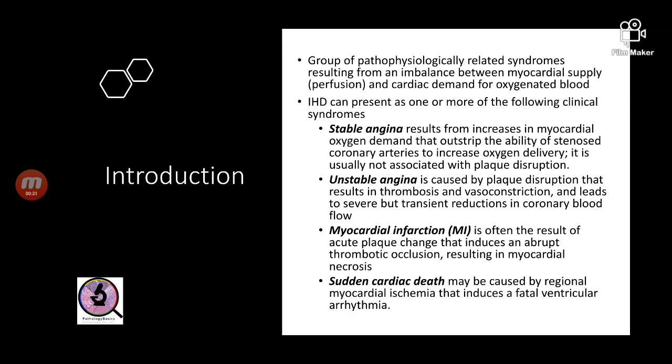What are ischemic heart diseases? They are pathophysiologically related syndromes that happen because there is an imbalance between the myocardial oxygen supply, or myocardial blood supply, and the demand for oxygenated blood. Ischemic heart disease can present clinically as one of the following syndromes: it can present as angina, which may be stable or unstable.